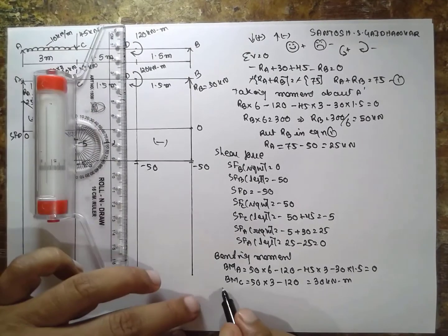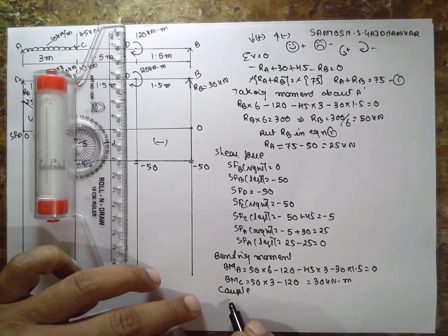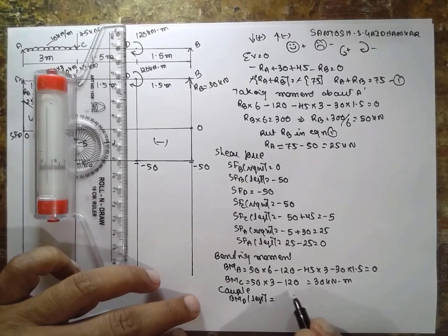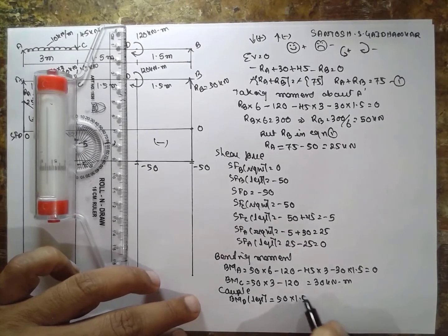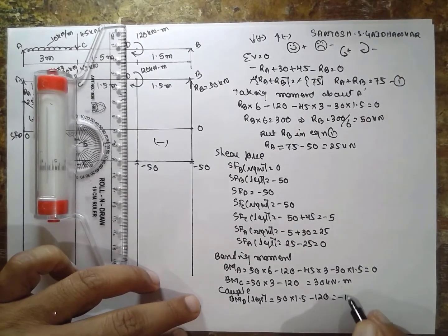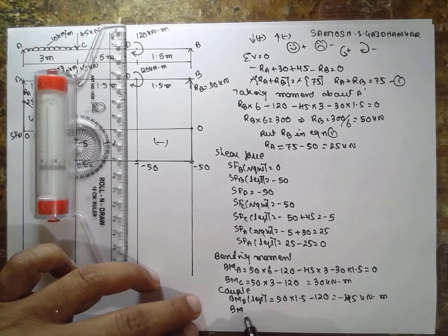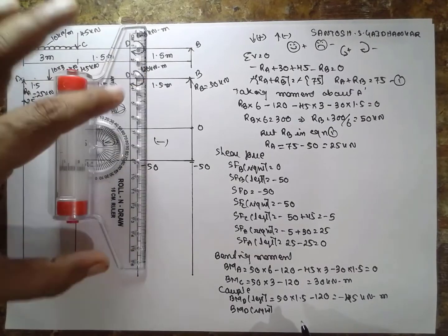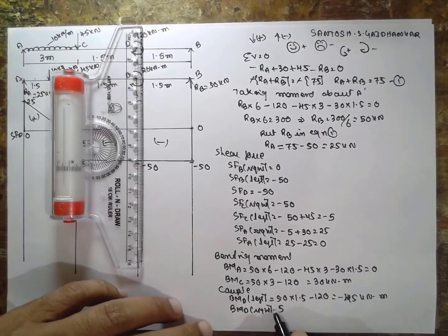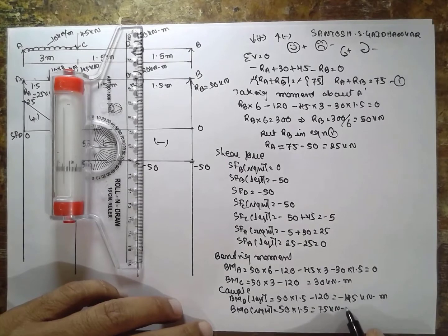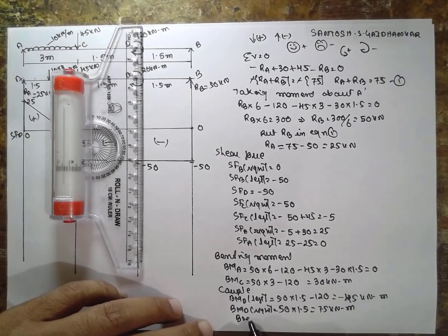BM at D (left): 50 into 1.5 minus 120 minus 45 = minus 45 kN·m. BM at D (right): 50 into 1.5 = 75 kN·m. BM at B = 0. So the bending moment values are: A = 0, C = 30 kN·m, D has two values: minus 45 kN·m on the left and 75 kN·m on the right, and B = 0.